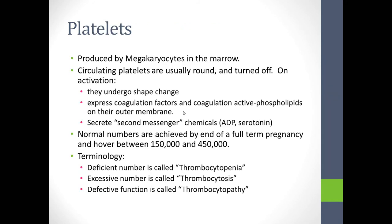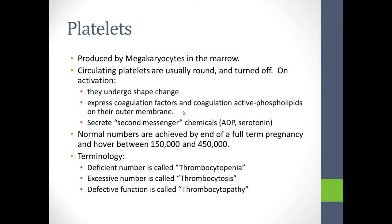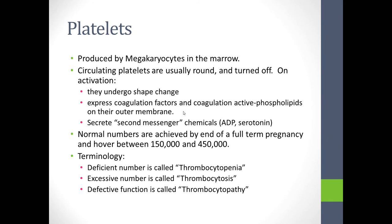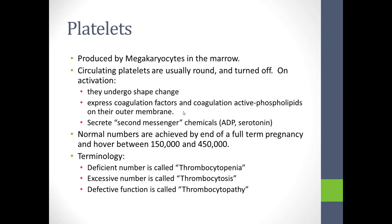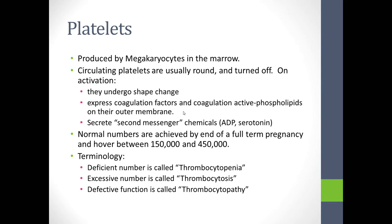Platelets are produced by the megakaryocytes in the bone marrow. They're normally round and deactivated — turned off. Once they receive a signal to activate, they undergo a shape change and become more stellate. They express coagulation factors and coagulation-active phospholipids on their outer membrane, and they secrete second messengers stored in granules inside them. The ones most commonly encountered clinically are ADP and serotonin. Platelets circulate in normal numbers from birth, hovering between 150,000 and 450,000.